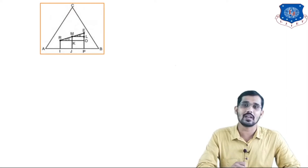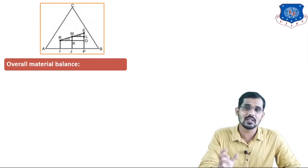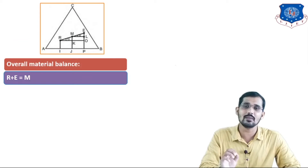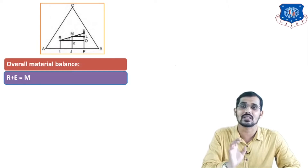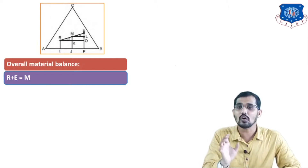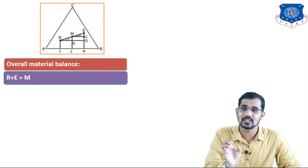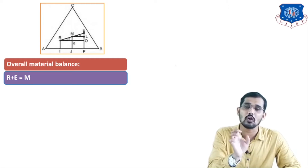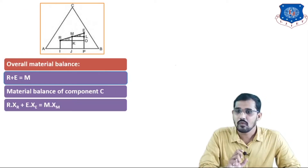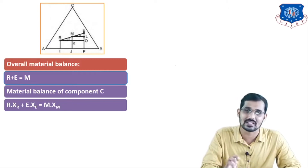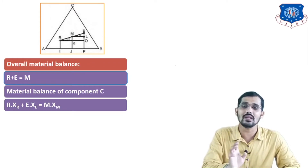Now we will take the overall material balance and component balance. The overall material balance is given by R plus E is equal to M, where R is the raffinate phase and E is the extract phase. Whenever we add the amount of raffinate phase to the extract phase, we get one mixture represented by M. After that, material balance of component C: the component C balance is R·XR + E·XE = M·XM.